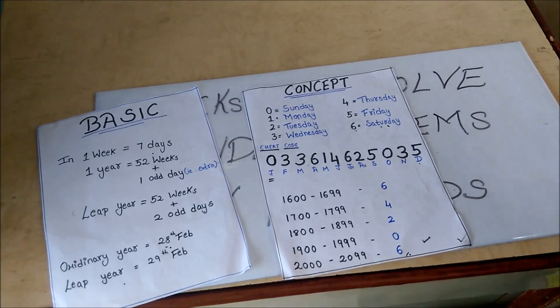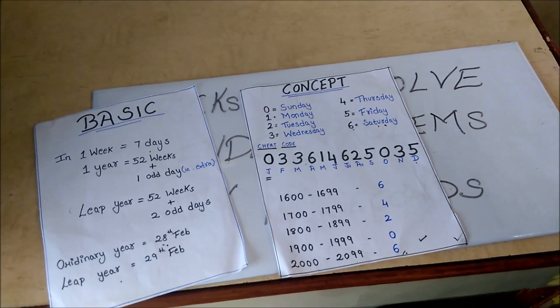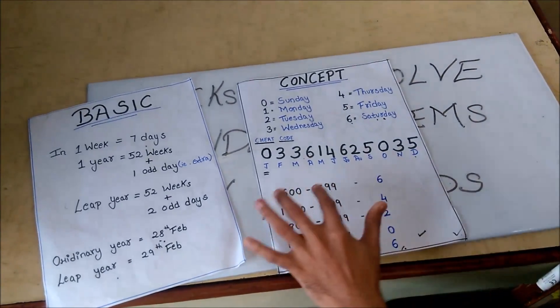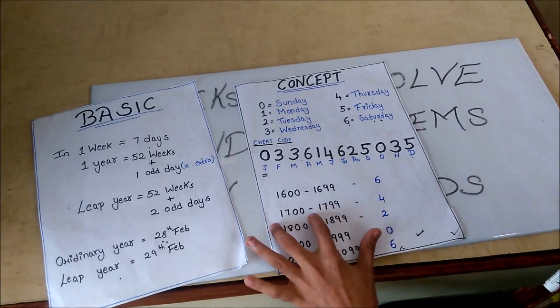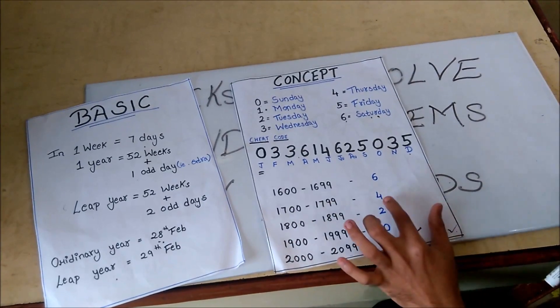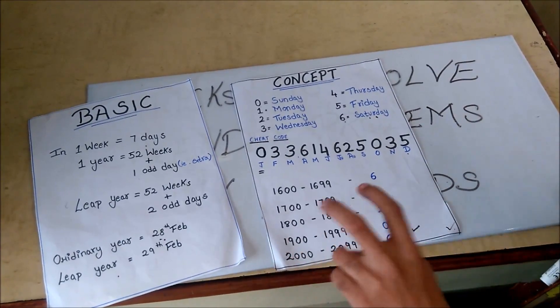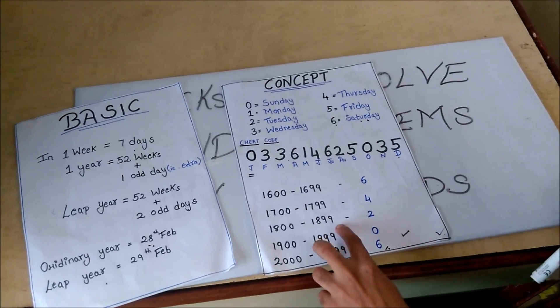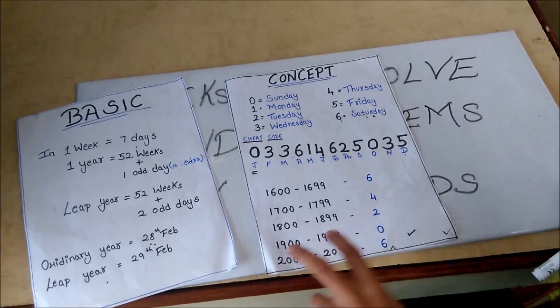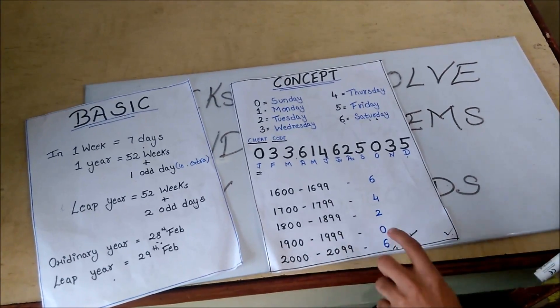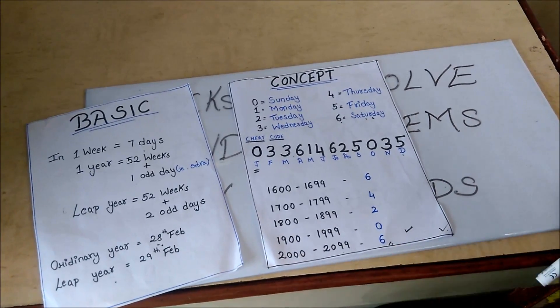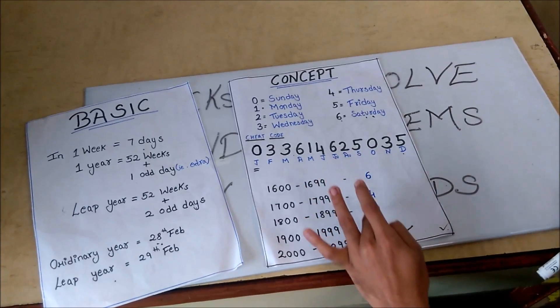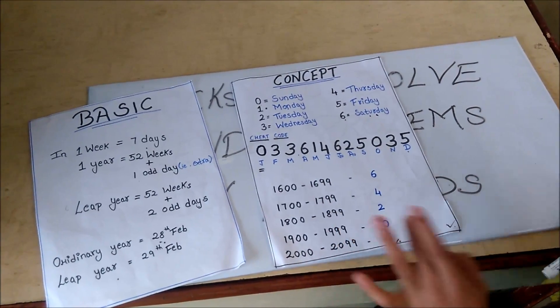Now see the year. In the given question, if the year is between 1600 to 1699, we will add 6. If the year is between 1700 to 1799, we add 4. If the year is between 1800 to 1899, we add 2. And between 1900 to 1999, we add 0. And from 2000 to 2099, we add 6. It's very easy. Just reduce 2 to 2 and then from 0 to 6.